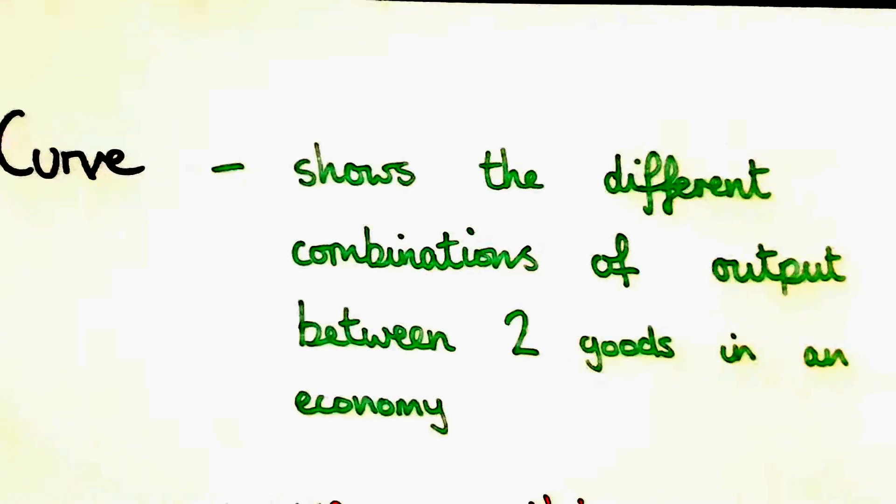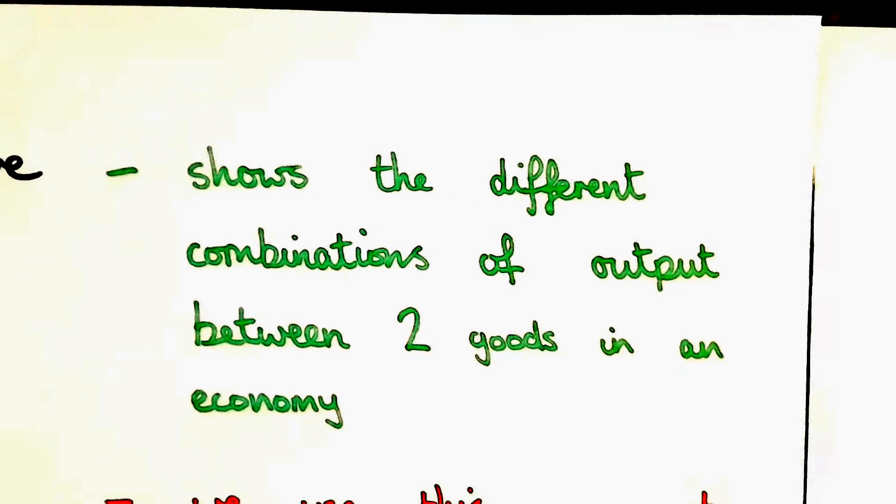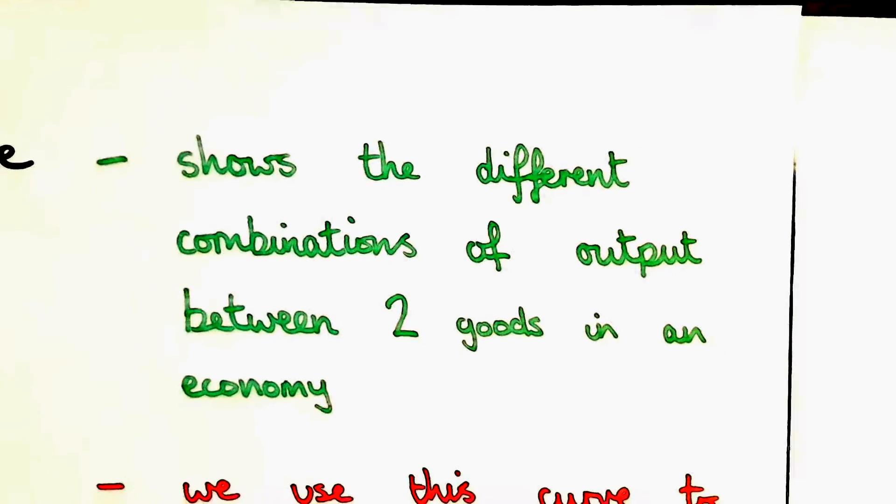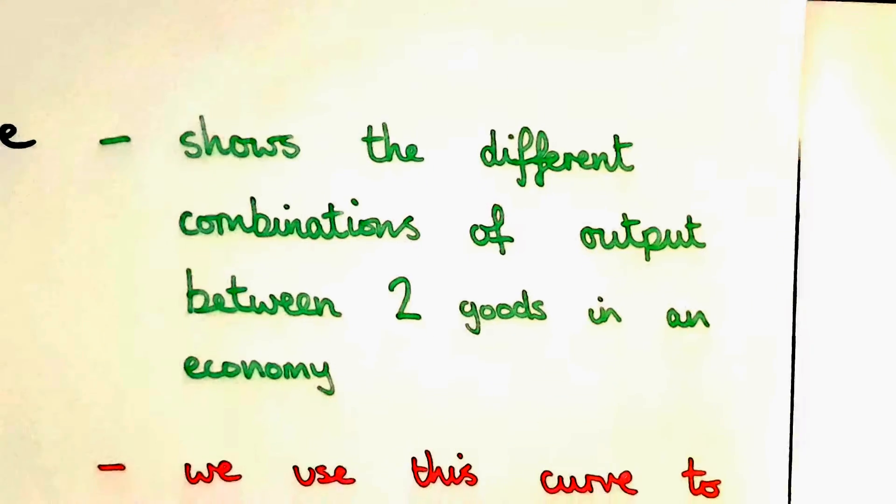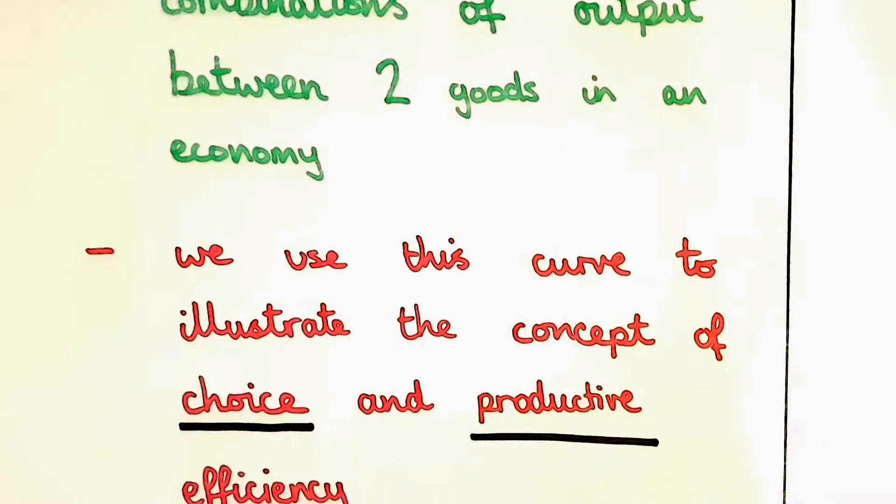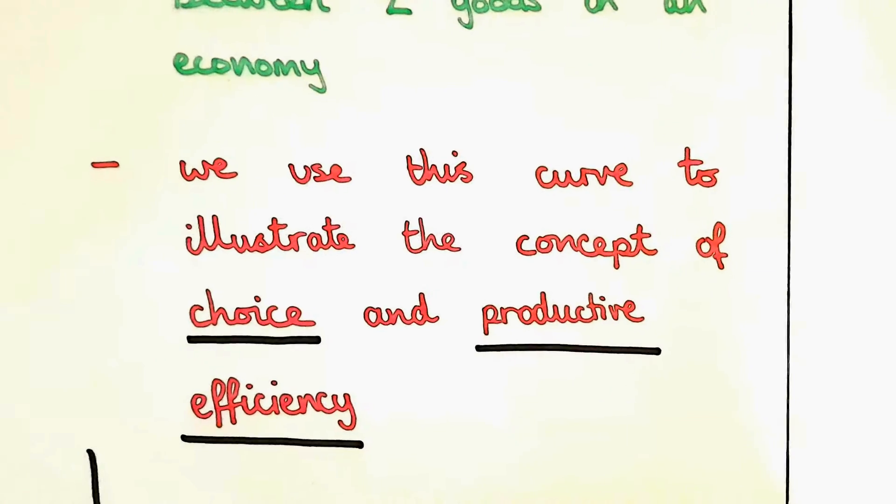Let's define things first. The PPF curve shows the different combinations of output between two goods in an economy. Economists use this curve to illustrate the concept of choice and productive efficiency.